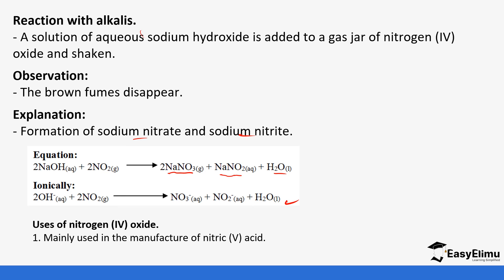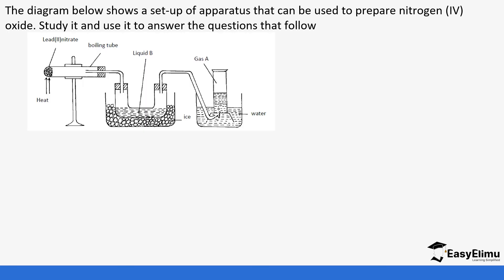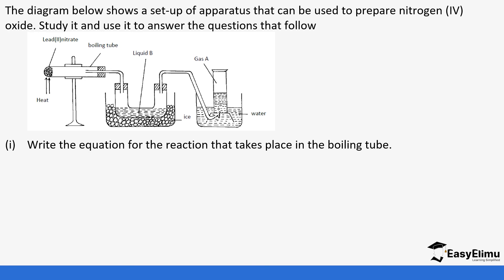One use of nitrogen 4 oxide is in the manufacture of nitric 5 acid. Now let's study a practice question. The diagram shows a setup to prepare nitrogen 4 oxide — lead 2 nitrate is heated in a boiling tube to produce liquid B and gas A. The first question: write the equation taking place in the boiling tube.